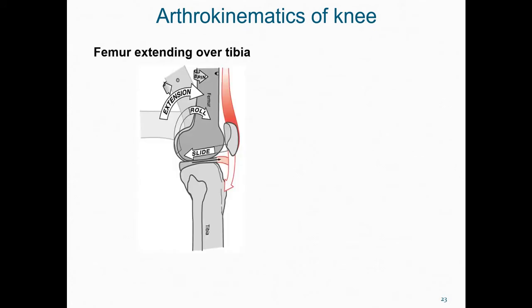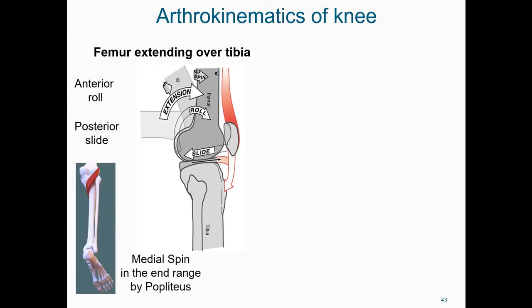Let's look at the arthrokinematics of the knee, starting by considering femoral on tibial knee extension — looking at the right leg. The accessory movements of the femur that facilitate joint congruency in this motion are anterior roll and posterior slide. As we move towards full extension in this motion, we also see a medial spin of the femur relative to the stationary tibia, facilitated by the popliteus.